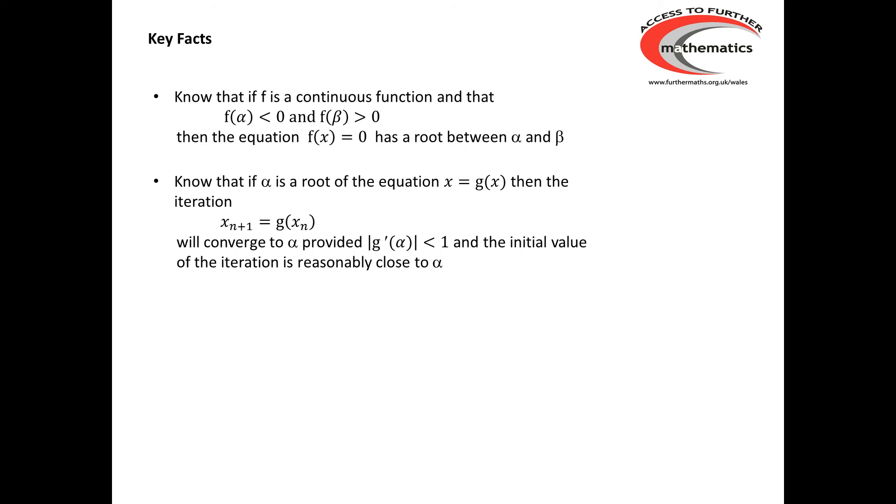If we know that alpha is a root of the equation x = g(x), then the iteration x_(n+1) = g(x_n) will converge to alpha provided we know that the absolute value of g'(α) is smaller than 1, and that the initial value of the iteration is reasonably close to alpha.